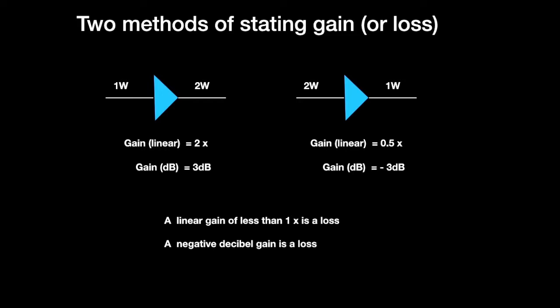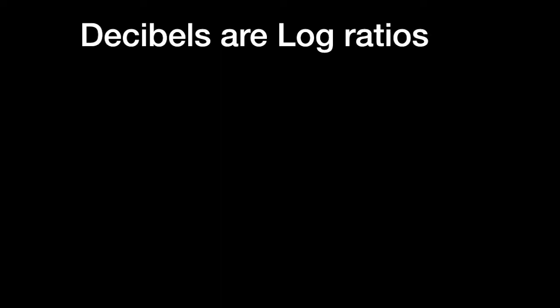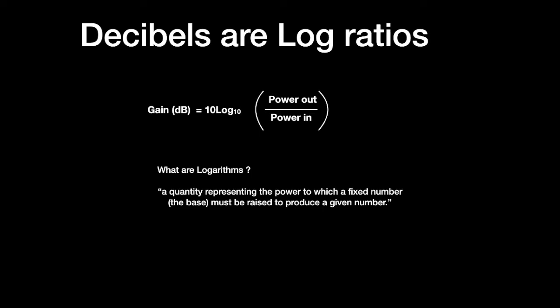We can see from the formula that decibels are logarithmic ratios. There's the formula again. The gain dB equals 10 log 10 times power out over power in. Or should I say, 10 log 10 of power out over power in. And this begs the question, what are logarithms? From a definition point of view, it's a quantity representing the power to which a fixed number, the base, must be raised to produce a given number.